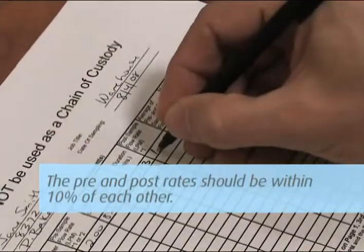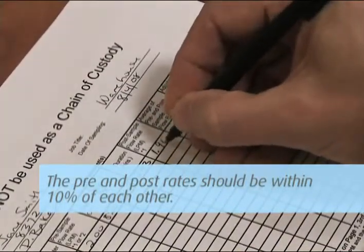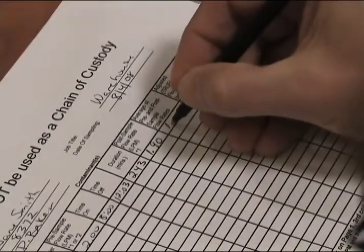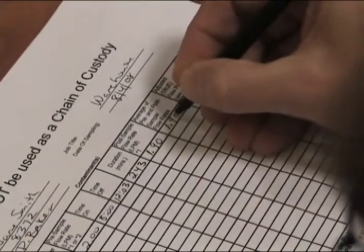The pre- and post-flow rates should be within 10% of each other. If they are, average the flow rates to determine the flow rate to be used to calculate the air volume.